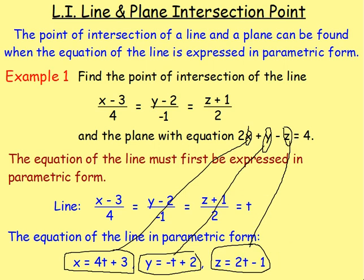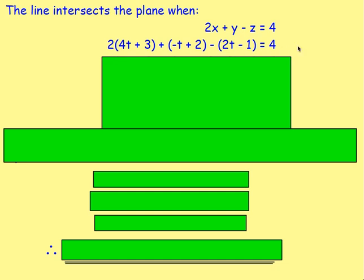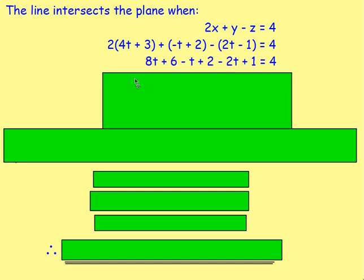The line intersects the plane when 2x + y - z = 4. You're subbing the values in, so x = 4t + 3, y = -t + 2, and z = 2t - 1. Getting rid of the brackets, that gives us 8t + 6 - t + 2 - 2t + 1 = 4. What do you think we do from there?